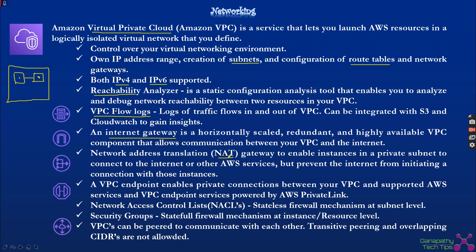NAT Gateway is used to provide internet access for resources deployed on private subnets. We deploy databases and other things on the private subnet for security reasons. To give those resources internet access, we deploy a NAT Gateway on the public subnet. It is single-directional traffic — instances on the private subnet can access the internet, but nobody from the internet can access resources on the private subnet.